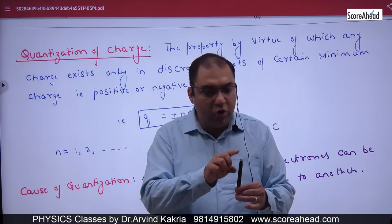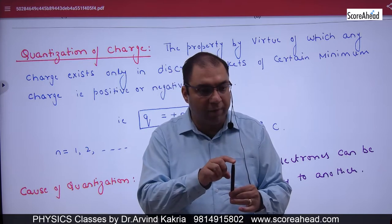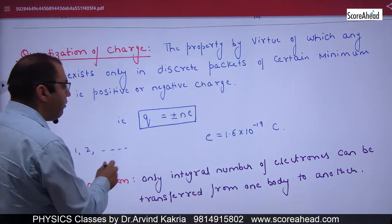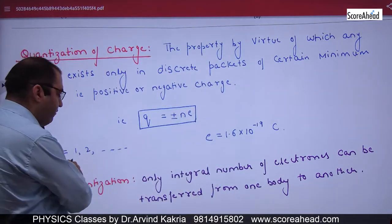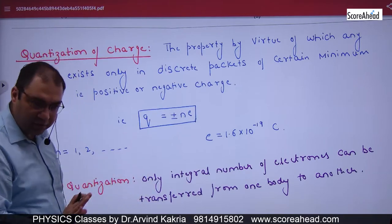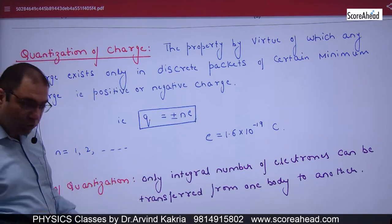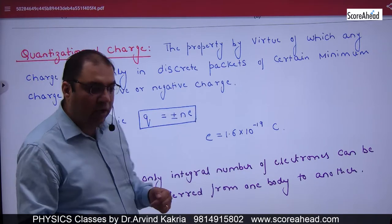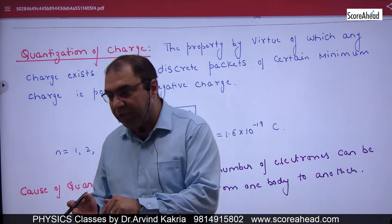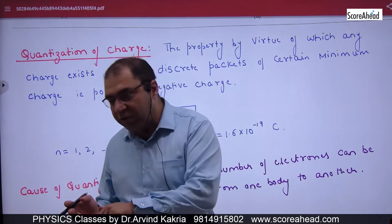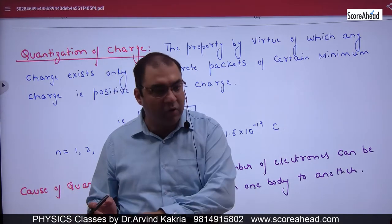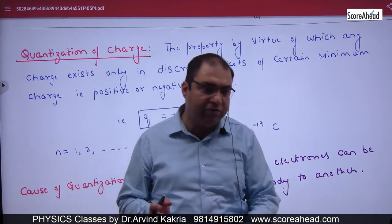The charge will be N times E, where N can be 1, 2, 3, 4, or anything. And in that way, if I gave an electron to a body — either 1, 2, 3, or N electrons — then there is negative charge.